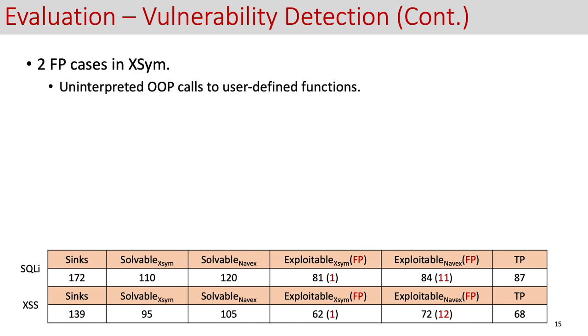We further analyze the reasons for the false positives in both tools. For the ones in XSym, we find that they are caused by the uninterpreted OOP function calls to certain user-defined functions, as the call target inference in a dynamic language like PHP is naturally challenging.